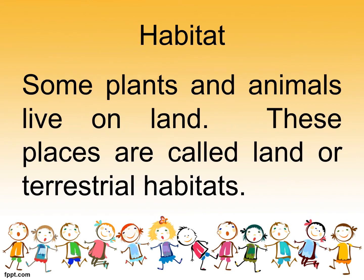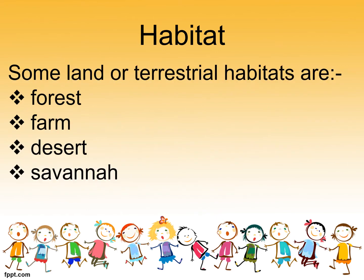Some plants and animals live on land. These places are called land or terrestrial habitats. So animals that live on land and plants that live on land live in habitats that are called land or terrestrial habitats. Some land or terrestrial habitats are forest, farm, desert and savannah. So those are the four habitats that we will be looking at in today's lesson.